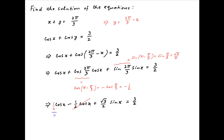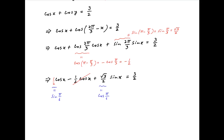On the left hand side, the 1/2 in the first term can be replaced with sin(π/6), and the √3/2 in the second term can be replaced with cos(π/6). Therefore the equation can be written as sin(π/6)·cos(x) plus cos(π/6)·sin(x) is equal to 3/2.